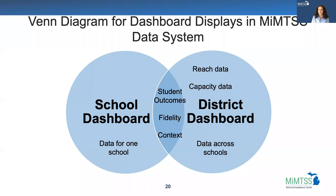In exploring the school and district dashboards, you were likely to notice that some data are the same and some are unique. Across both dashboards, you see student outcomes and fidelity data displayed, which does beg the natural question: if the district's going to look at the same data as the school during data review, then what's the point? Isn't that redundant or inefficient? No — we've found that even in tiny districts where there's just one building, there is value in looking at the same data from two different vantage points. Let's dig a bit deeper into this.